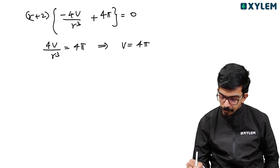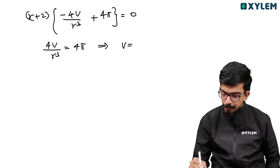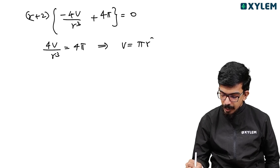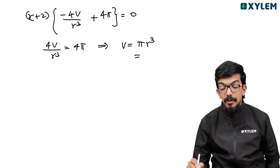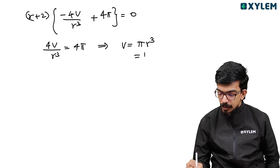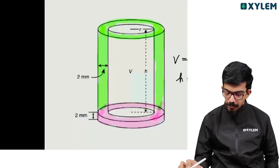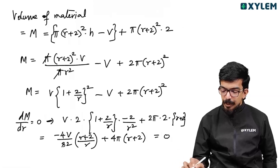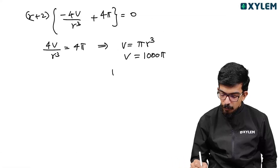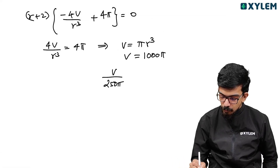With r equals 10, V equals π times 10^3 equals 1000π. Therefore V divided by 250π equals 1000π over 250π equals 4. The answer is 4.